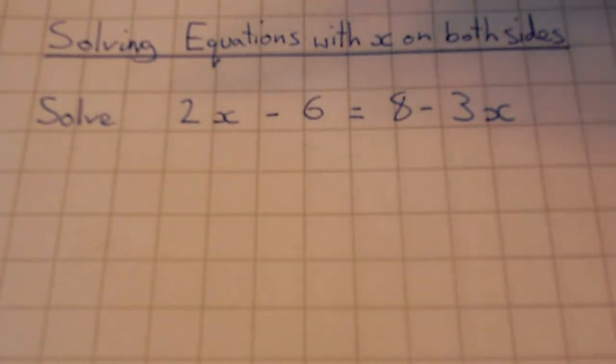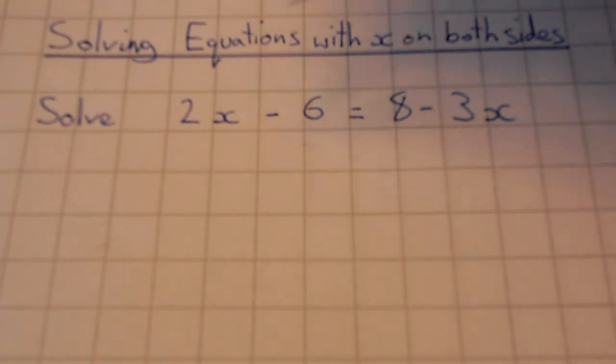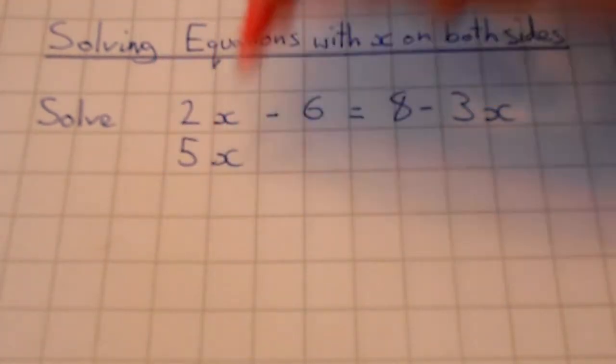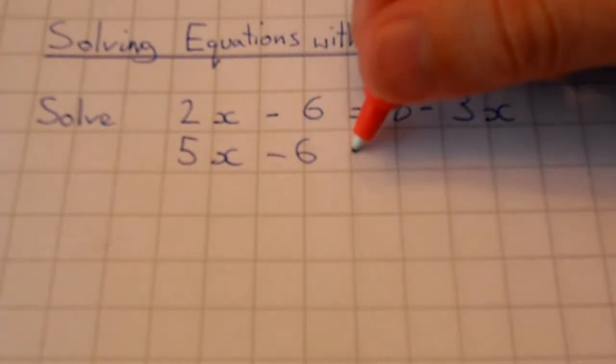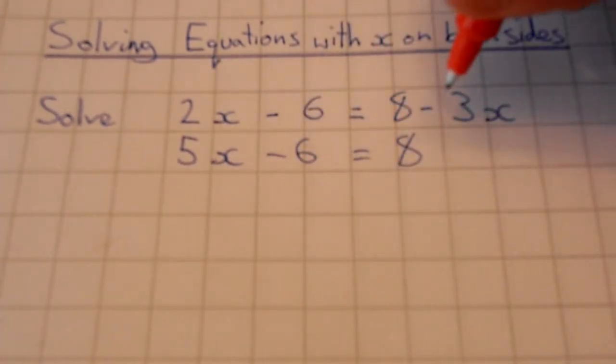So in this example we've got here, solve 2x minus 6 equals 8 minus 3x. If we add on this negative 3x to both sides, so if I add on 3x to both sides, that will give me 5x minus 6 equals 8. Because minus 3x plus another 3x is 0.